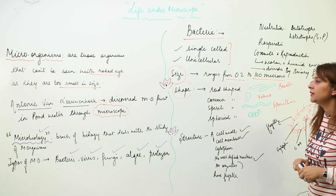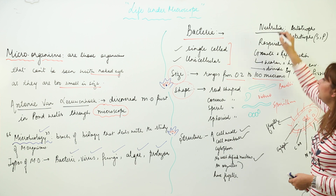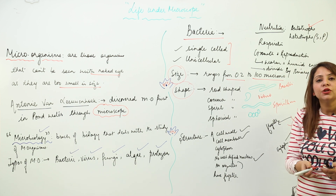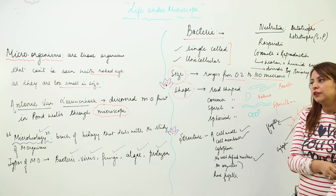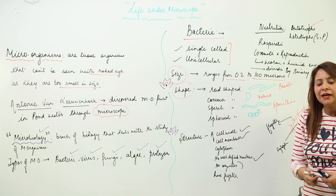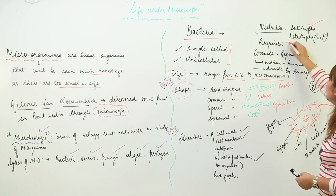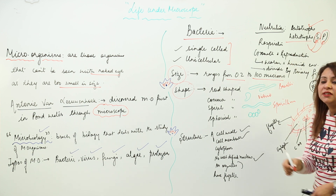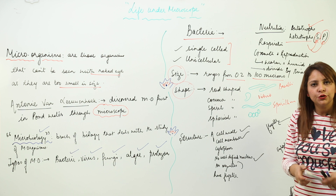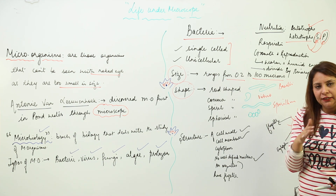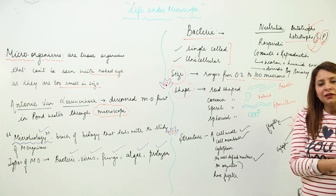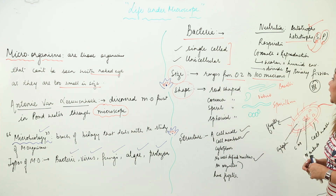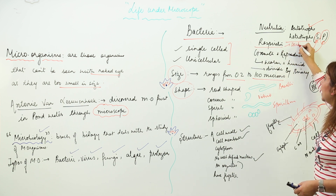Regarding nutrition: some bacteria contain photosynthetic pigments and are capable of photosynthesis, making them autotrophs. But most bacteria lack chlorophyll or any photosynthetic pigment, so they cannot photosynthesize and depend on others for nutrition — making them heterotrophs. Heterotrophic bacteria are further divided into saprophytes, which feed on dead and decaying matter, and parasites, which live in or on the body of a host to fulfill their nutritional requirements.